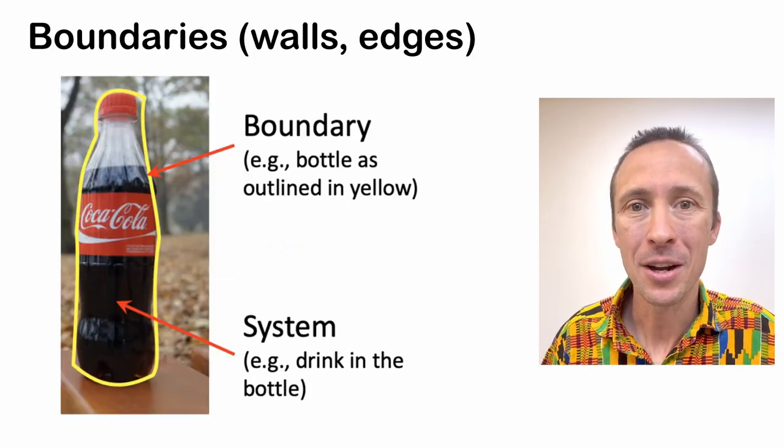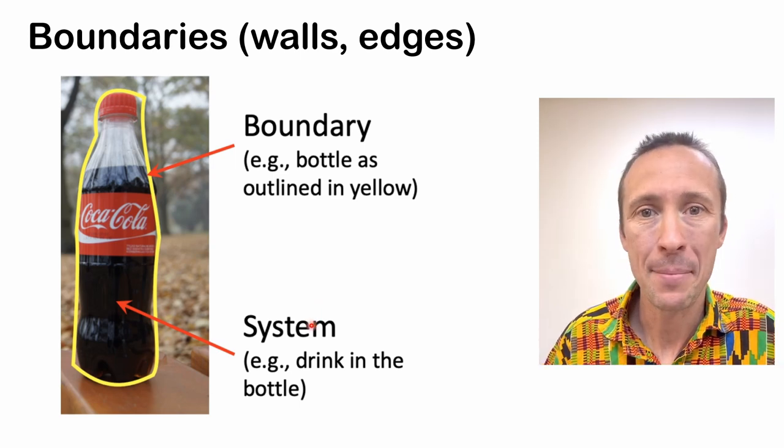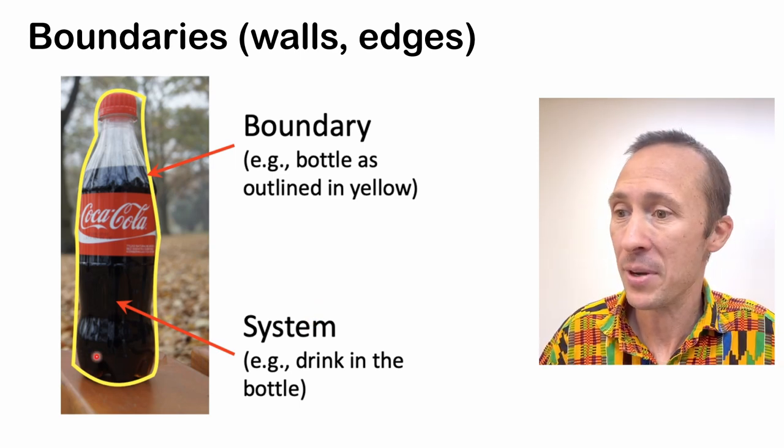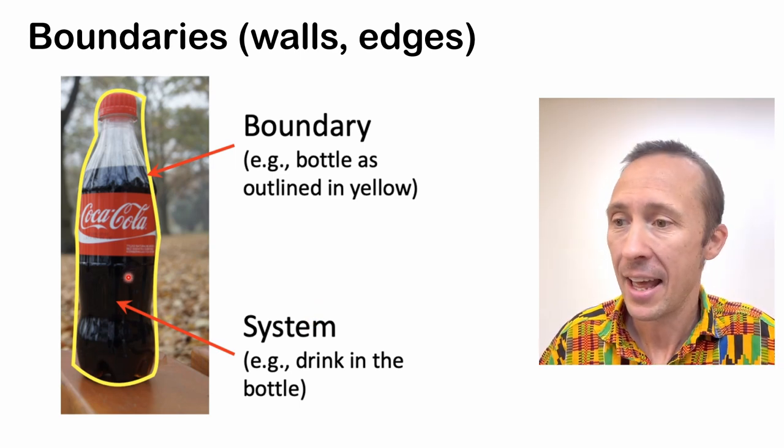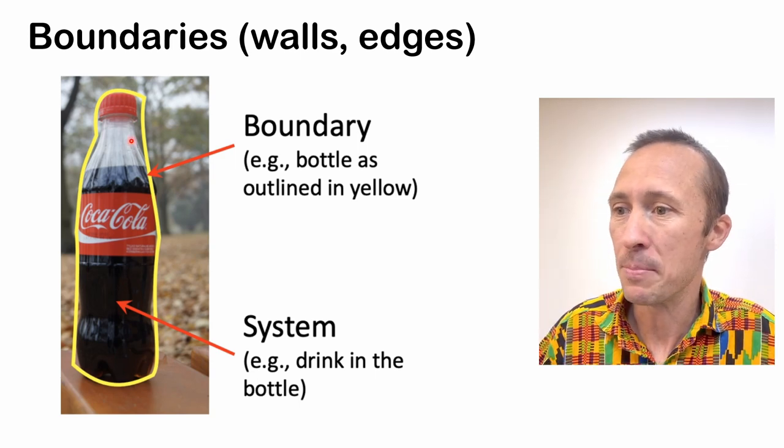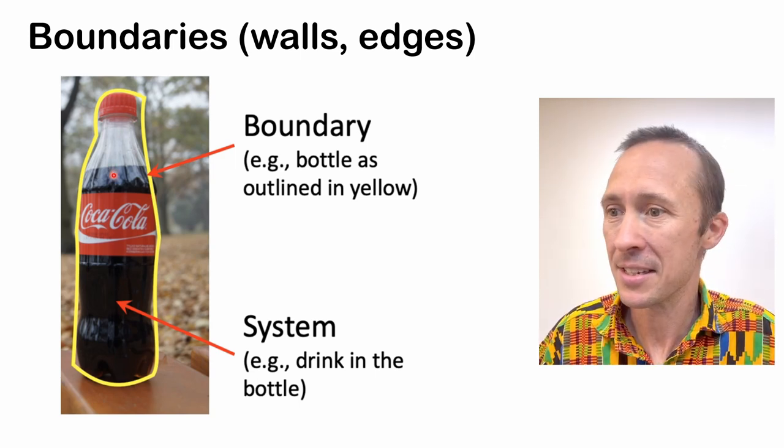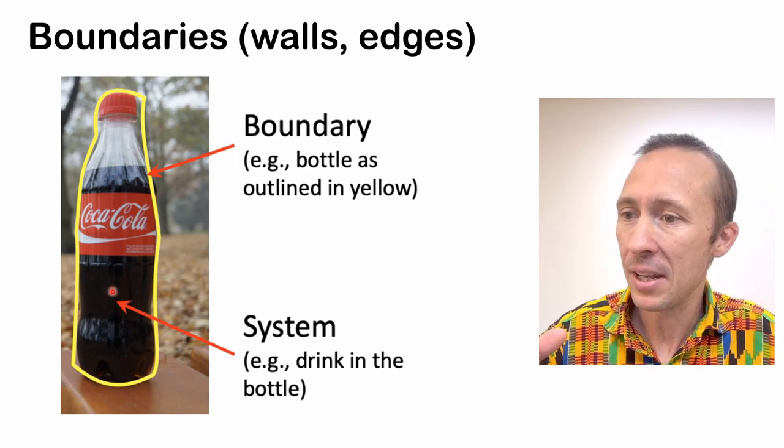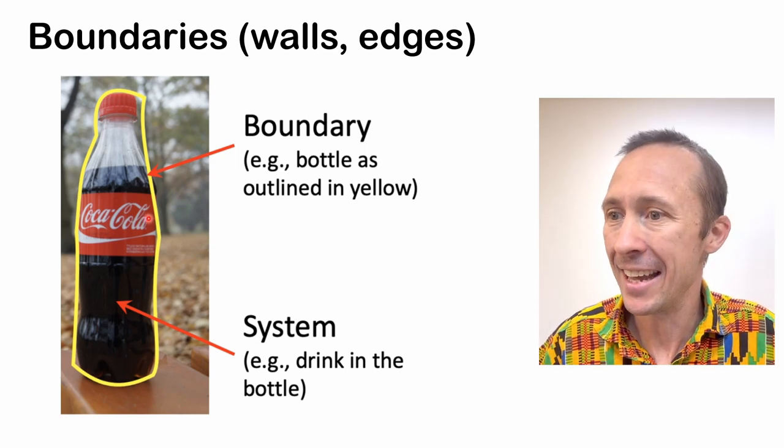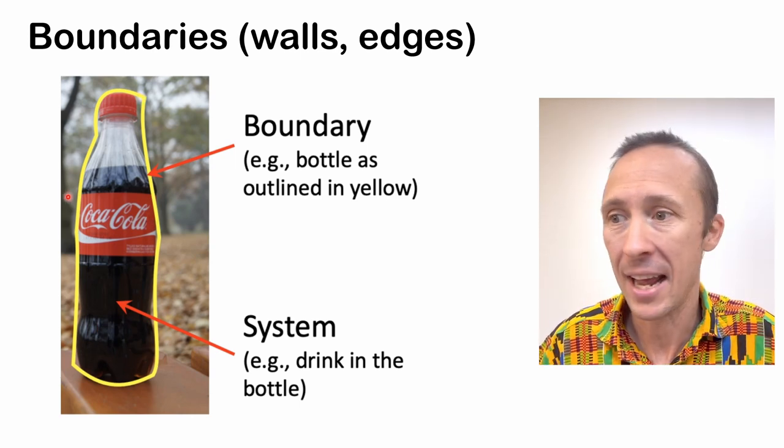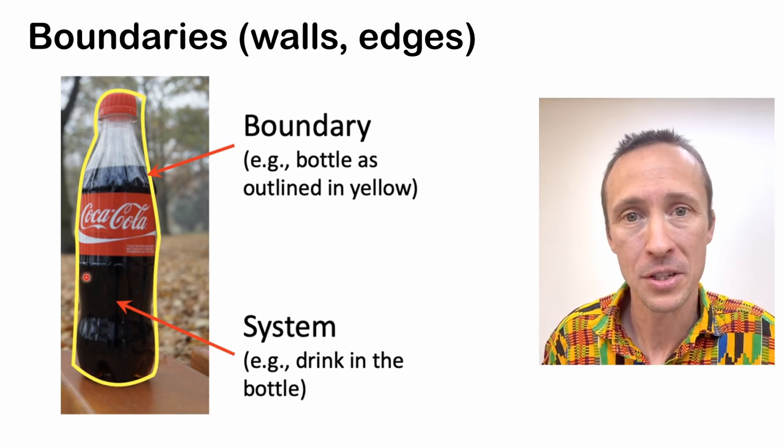Okay, let's talk about boundaries. So this Coke bottle is an example of a closed system. If we think of the drink, and I also like to think of the headspace and the liquid together as the system. And the plastic bottle and the lid is comprised of the boundary, and that boundary is also part of the surrounding.